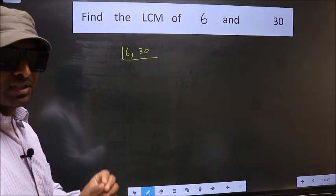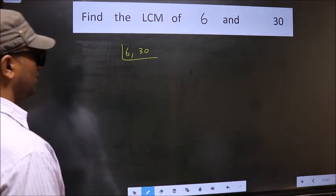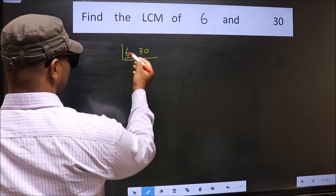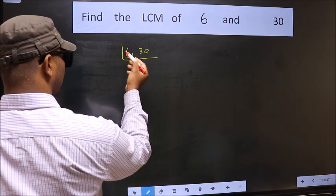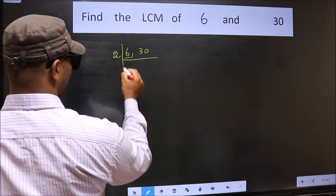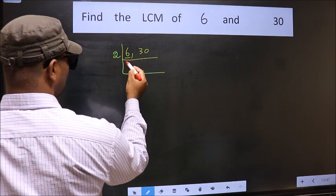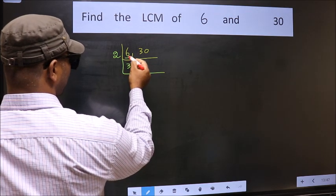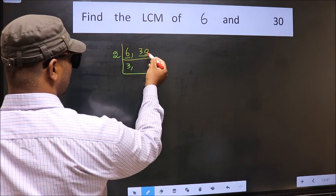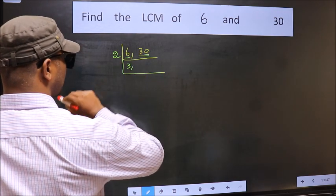Now you should focus on the first number which is 6 here. 6 is even so take 2. When do we get 6 in 2 table? 2 times 3 is 6. Now the other number 30, last digit 0 so this number is divisible by 2.